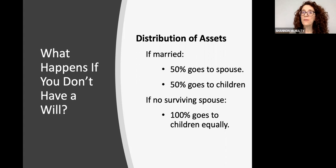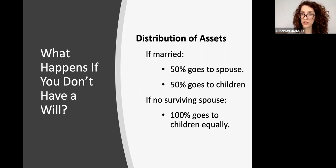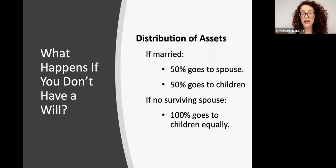If you don't have a will, your assets are distributed pursuant to the laws of the state you were living in. In New York, if you're married, 50% goes to your spouse and 50% goes to your children — a lot of people aren't aware of that; they think everything would go to their spouse. If there is no surviving spouse, everything goes to your children equally.